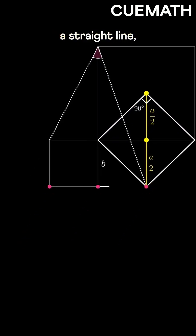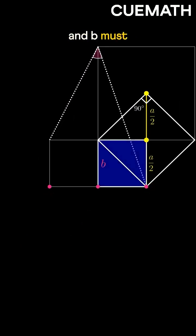Since these three points lie on a straight line, it forms a square, and B must be A by 2.